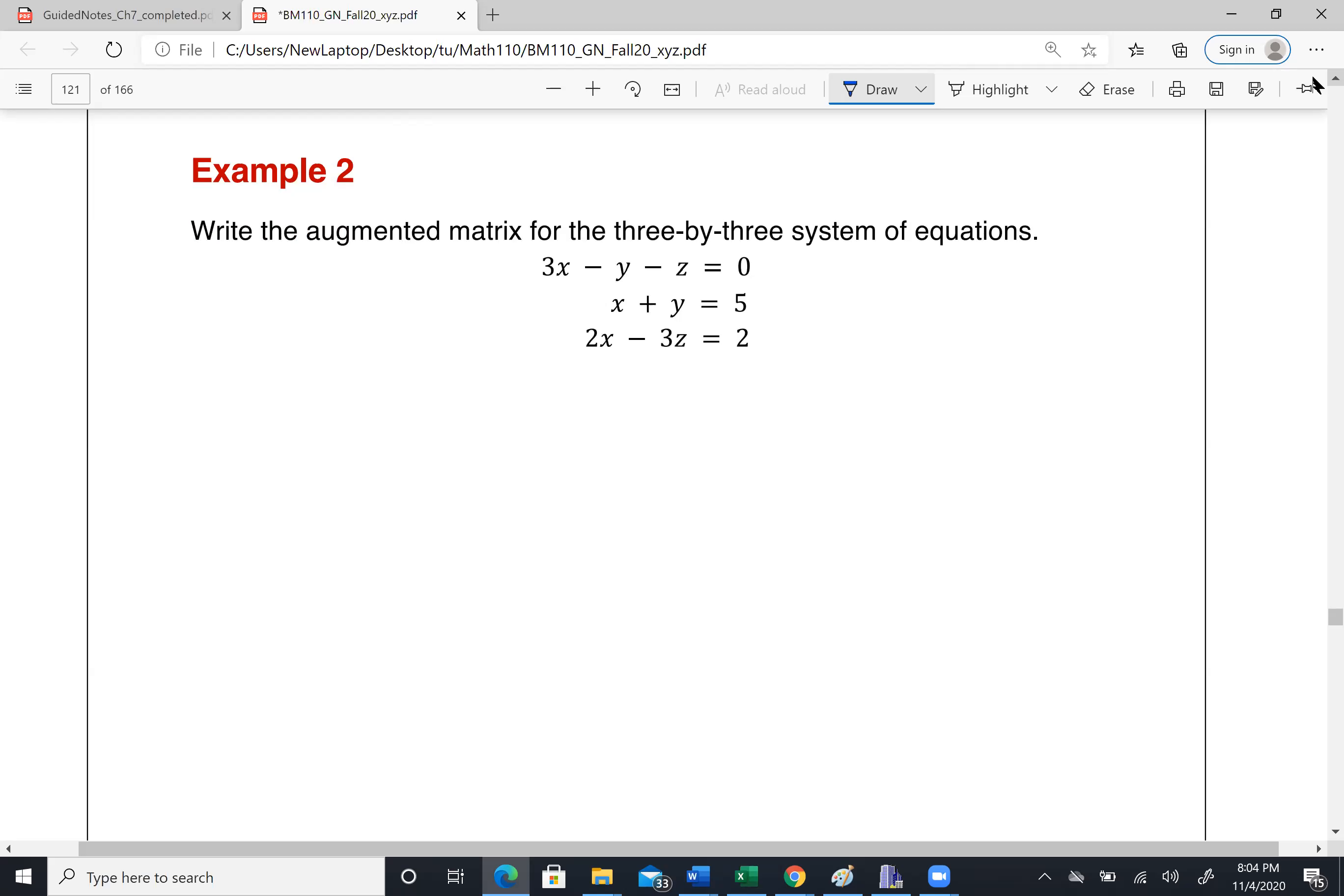We're gonna write the augmented matrix for the three by three system of equation. By the way, I want to say the three by three here is talking about three rows and three variables. So because we have three rows and three variables, that is why we call this my three system of equation.